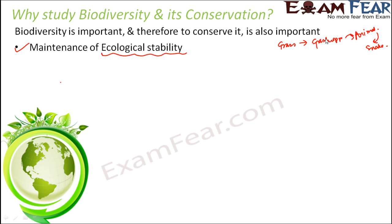What will happen if all the grasshoppers become extinct? First, there will be nobody to eat the grass. Second, the frogs will have nothing to eat and will start dying. Once the frogs die, the snakes will also start starving. So even if one variety of organism goes extinct, it can affect the entire food chain and disturb the stability of the ecology.